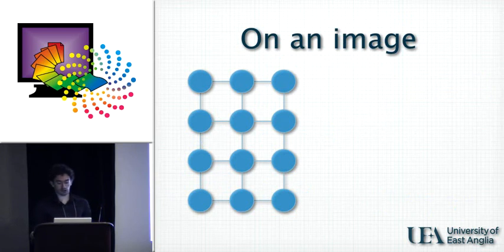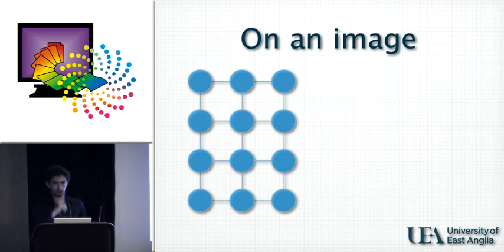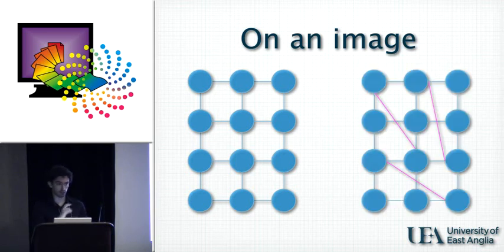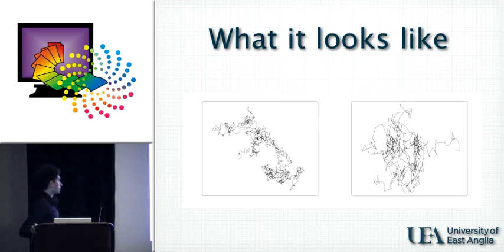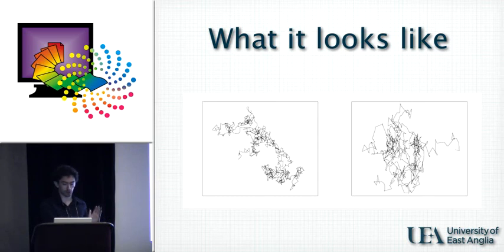So what happens when we apply this on an image? An image can be seen as a grid graph represented as in this case. If we run this algorithm there, what we get is a pseudo-random walk where each step goes one pixel up, down, right, or left. To obtain something more similar to Brownian motion, we introduce some edges that connect pixels that are not neighbors, and in this case we get something that looks like Brownian motion — which is the path on the right. This is not the whole path, just a chunk, because clearly the whole path would visit the whole image and fill up the entire square.